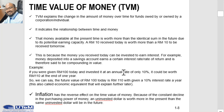For example, money deposited into a savings account earns a certain interest rate or rate of return, and is therefore said to be compounding in value. As an example, if you were given 100 ringgit today and invested it at an annual rate of 10%, it will be worth 110 ringgit at the end of one year. So we can say the future value of 100 ringgit today is equivalent to 110 ringgit with a given 10% interest rate per year.